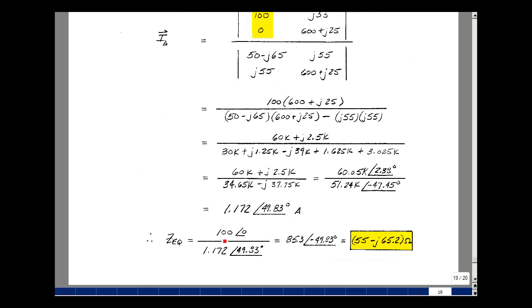So Z equivalent then is the voltage we're applying, which is 100 at angle zero, divided by the current I sub A coming out of our voltage source. This ratio is about 85.3, and then zero minus this angle is a minus 49.83. Let's put that into rectangular form.